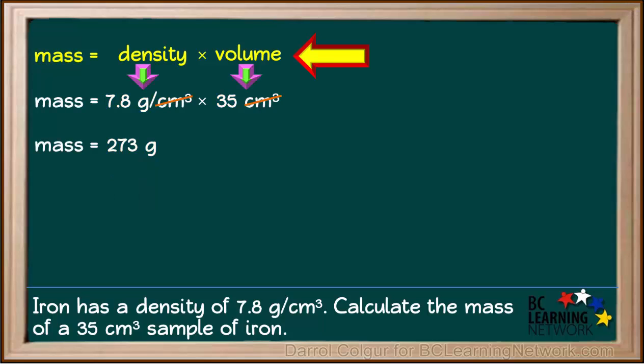The whole calculation can be summarized here: mass equals density times volume, which is 7.8 grams per cubic centimeter times 35 cubic centimeters, which comes out to 273 grams.